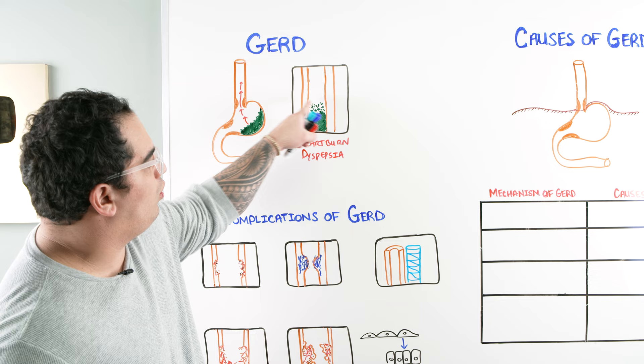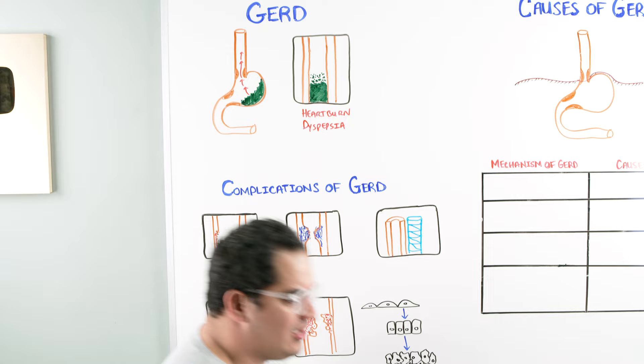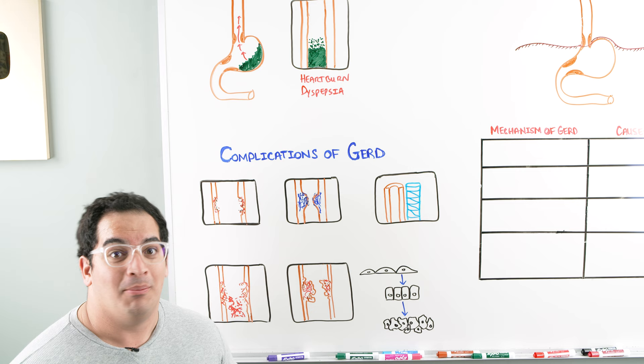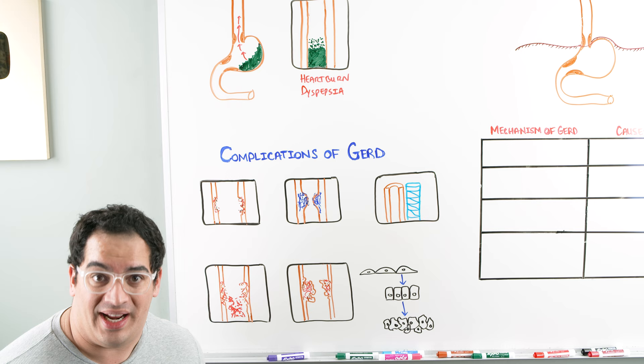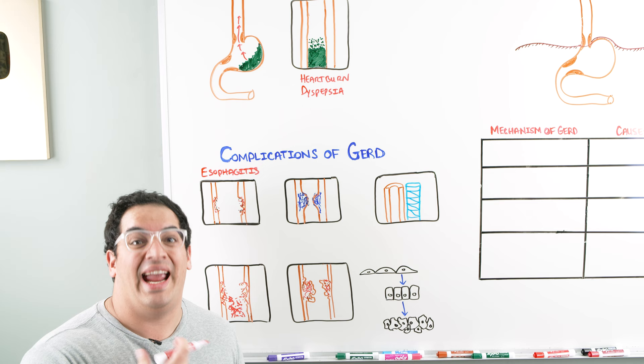The hydrochloric acid coming up into the esophagus causes burning and inflammation. What are the complications associated with GERD? It can really inflame the esophagus and start ulcerating it, leading to esophagitis. Patients with esophagitis can present with odynophagia — a lot of pain with swallowing.